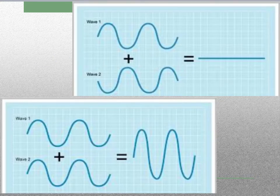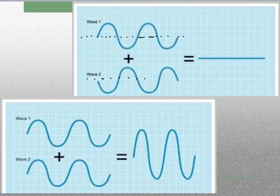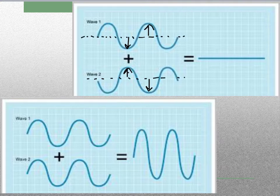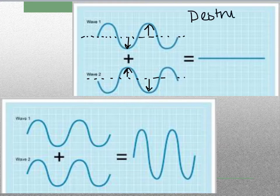Now if we look at a periodic wave, the same thing can happen. The equilibrium point runs through both waves. Here, one is going up and the other is going down — they're lined up like that throughout. Because when one is up the other is down, they cancel each other out and we end up with a flat line. Even though we really have two waves happening, they're destructively interfering to produce nothing. This is an example of destructive interference.